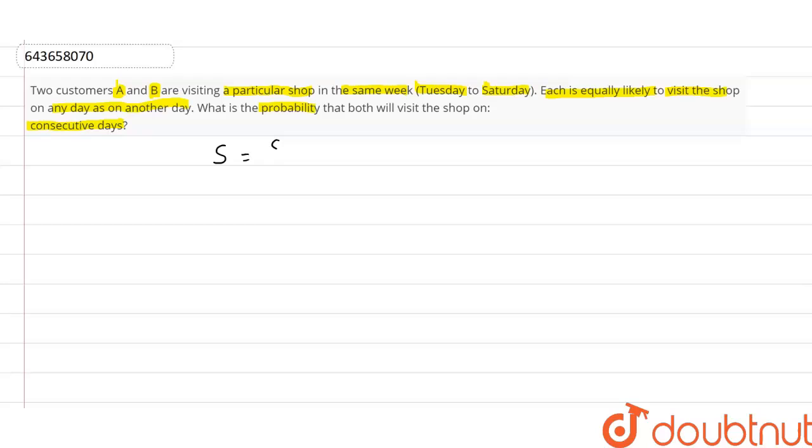So we have the sample space which will come out to be (T,T), (T,W), Tuesday and Thursday, Tuesday and Friday, Tuesday and Saturday, and so on until we get Saturday to Saturday. This will be the entire sample space.